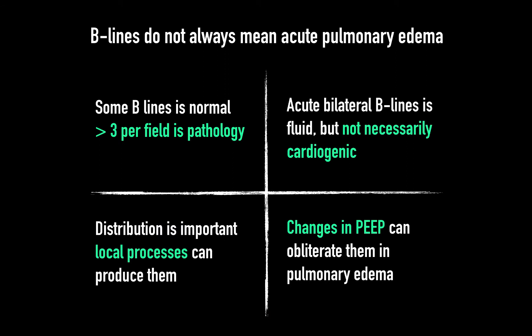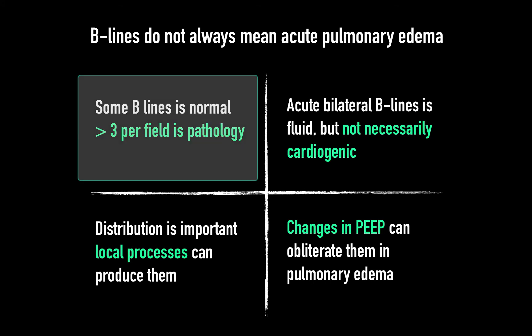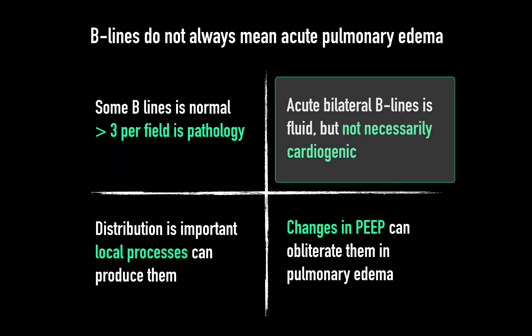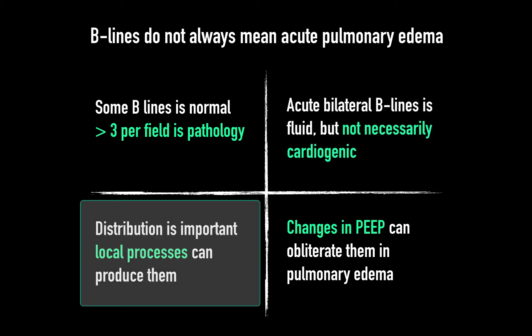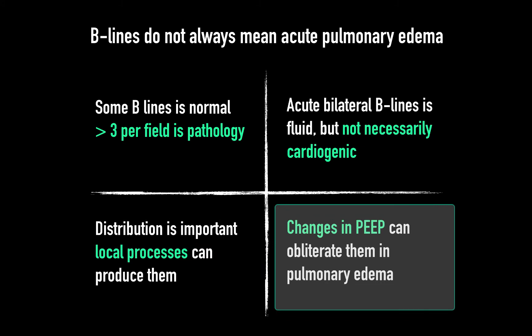There are some important caveats to B-lines. While most people associate them with pulmonary edema, they represent any sort of interstitial thickening. Other characteristics and context are critical. Notably, B-lines can be normal, such as in dependent areas subject to mild atelectasis. Acute bilateral B-lines can also represent non-cardiogenic pulmonary edema. Local processes can produce them, such as early pneumonia. And they can be obliterated by positive pressure ventilation in some cases, despite being the initiating cause of respiratory failure.